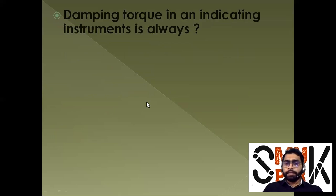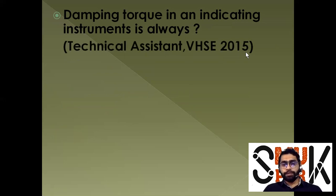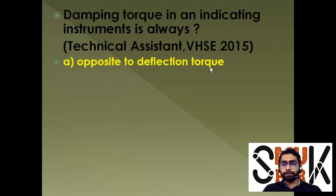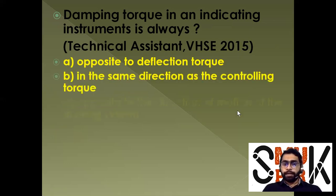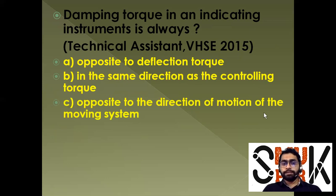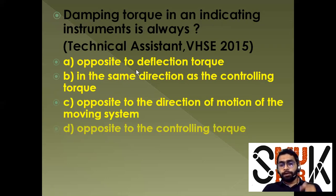Damping torque in an indicator instrument is always: in the same direction as the controlling torque, opposite to the direction of motion of the moving system, or opposite to the controlling torque. In a moving system, deflection torque and controlling torque are in mutually opposite directions.